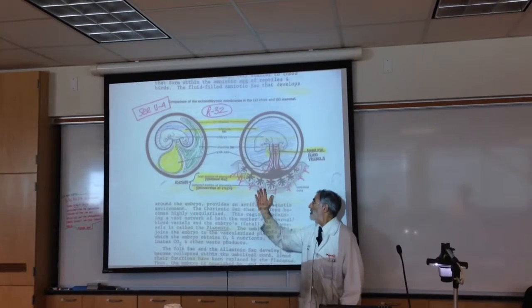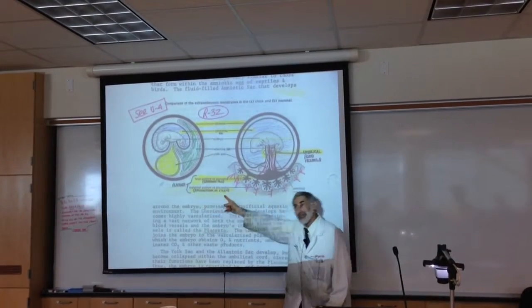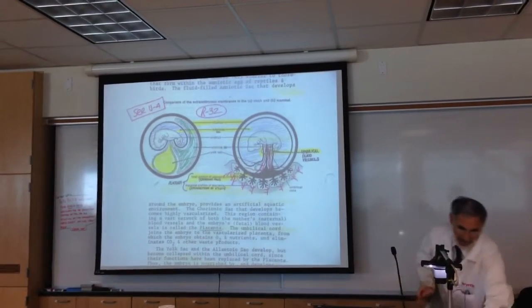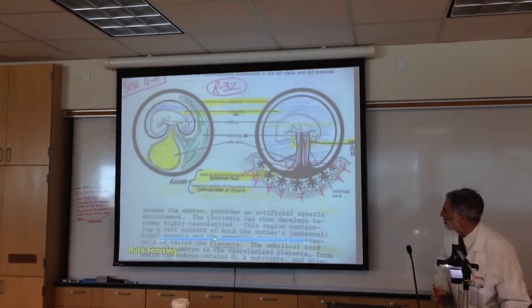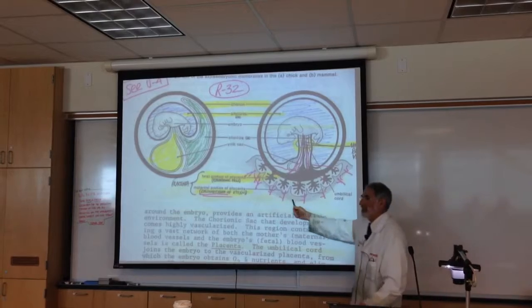And then there are blood vessels of the mother that are growing in the endometrium of the uterus. Didn't we learn that the hormone progesterone promotes the growth of blood vessels of the mother in the endometrium?